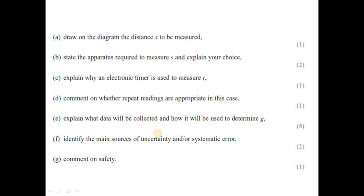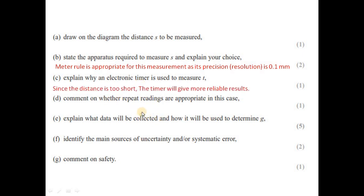Part B state the apparatus required to measure s and explain your choice. s is the distance. We use meter rule to measure the height because its precision is 0.1 centimeter. The meter rule is appropriate for this measurement. Explain why an electronic timer is used to measure the time. Because the distance fallen is too short, the electronic timer will measure a reliable time. Because if you use a stopwatch, it will involve a reaction time and less reliable result. Because of the very small distance, timer will give more reliable result. Distance is too short, stopwatch involves reaction time, so less reliable result. Both are acceptable.